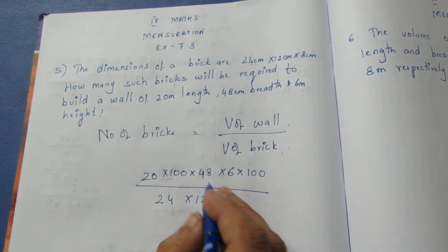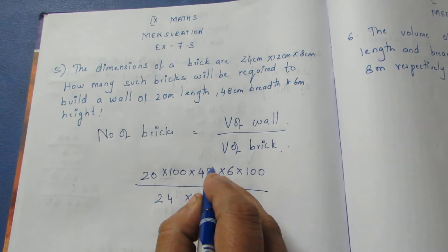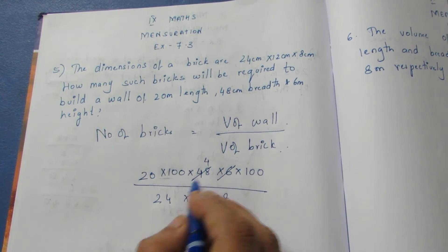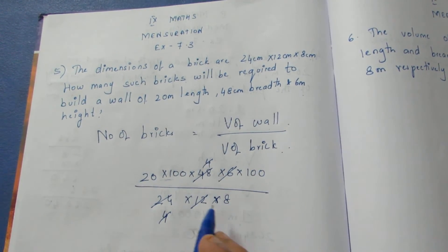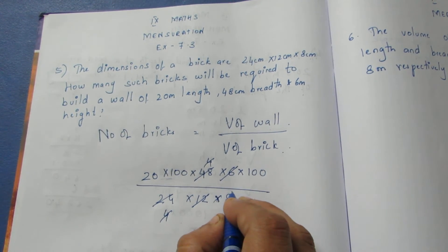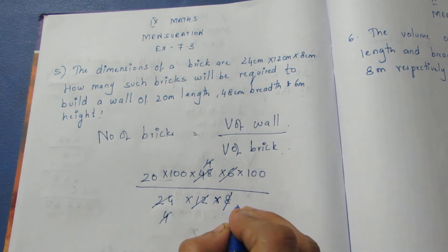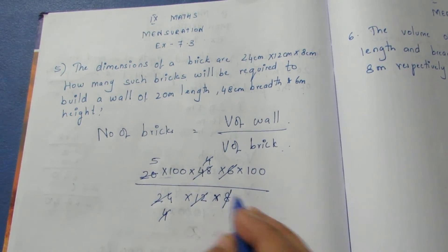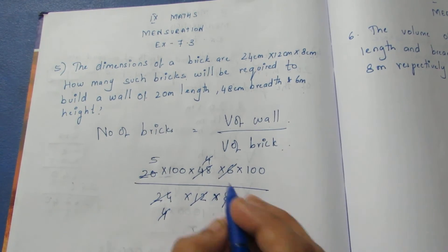Now we cancel: 12 and 4 give 48. Then 6 fours are 24, and the 4s cancel. The remaining balance is 8, which cancels in the 2 times table. 4 twos are 8, 4 fives are 20. Cancelling the 5 gives us simplified values.